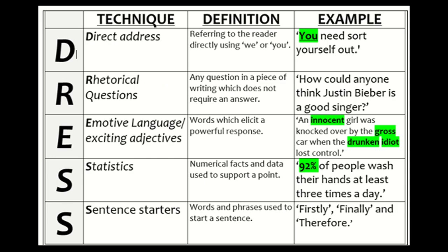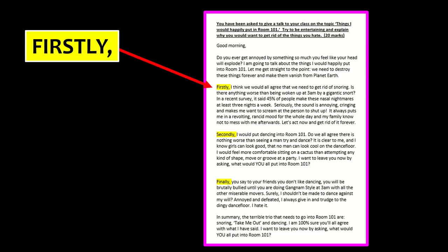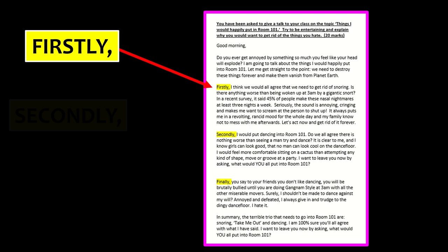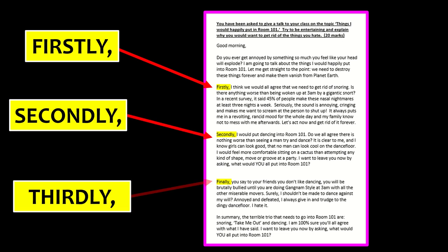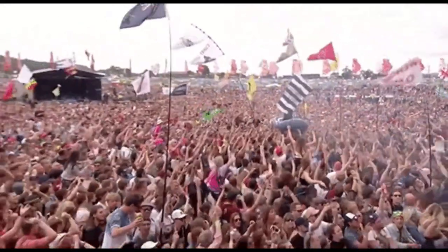Pause the video if you're not sure about the various DRESS techniques. A really easy way to bump up your grade is by using sentence starters. At a grade four or five level, just using firstly, secondly, and thirdly for your main paragraphs will definitely push your marks up. If you're trying to push yourself higher, try using sentence starters in the middle of your paragraphs too — like 'in contrast,' 'fortunately,' 'seriously,' and so on.